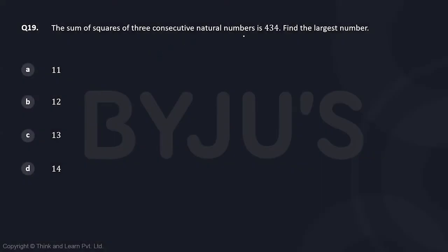The sum of squares of three consecutive natural numbers is 434. Find the largest number. Since this is not a theta question, we can use the options.